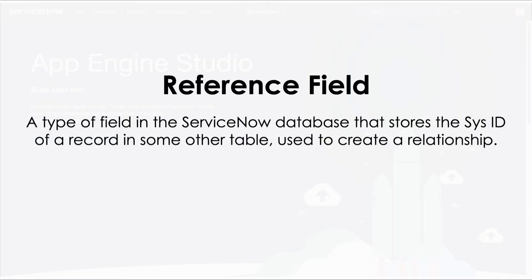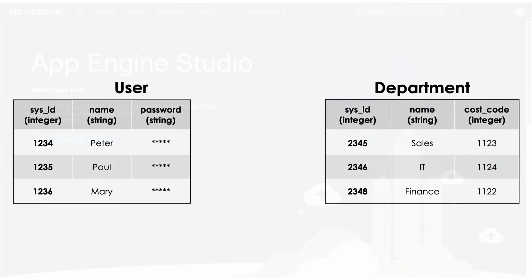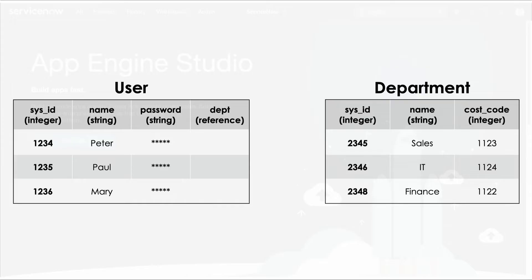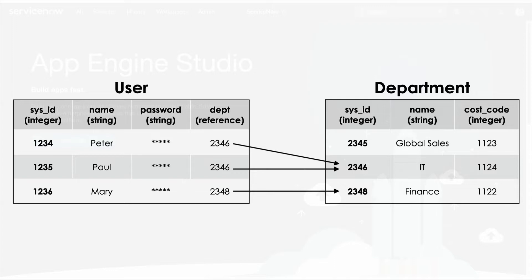If I have a table that stores data about users, and another table that stores data about departments, I can create a reference field in the user table that refers to the department table. I can then populate that field with the SysID of a corresponding record in the department table. Now those two records are joined together, and I can track which department each user belongs to without duplicating any data. When I need to change something about a department, I can do that in the department table without touching the user record. And if a user switches departments, I can simply update the reference field with the new department's SysID.